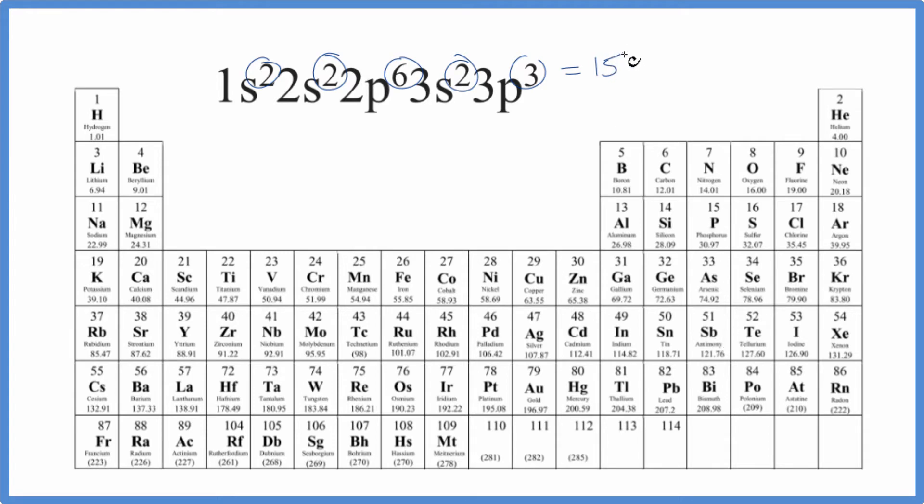So if we know that we have 15 electrons, we just find this right here, phosphorus, the atomic number 15. That means it has 15 protons. Since it's neutral, it'll have 15 electrons. So this is the electron configuration for phosphorus.